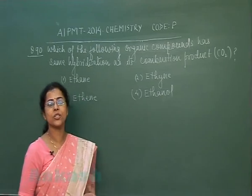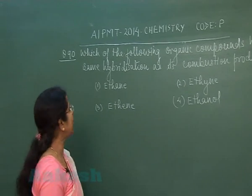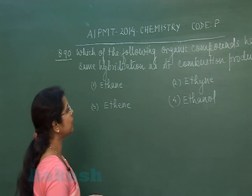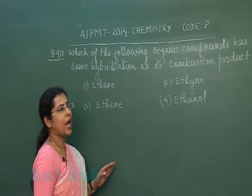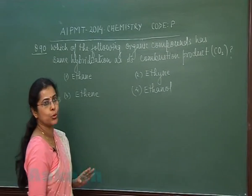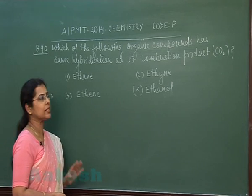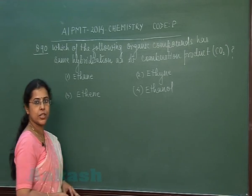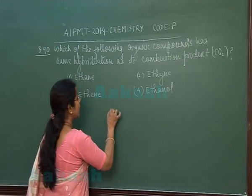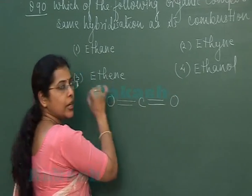The last question of today's paper is question number 90: which of the following organic compounds has the same hybridization as its combustion product CO₂? First option is ethane, second option is ethyne, third option is ethene, and fourth option is ethanol.